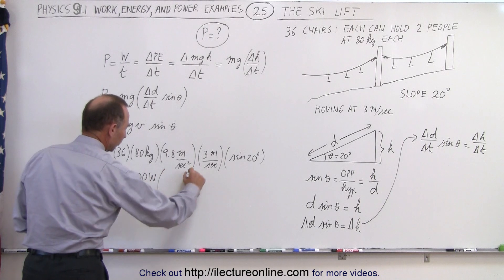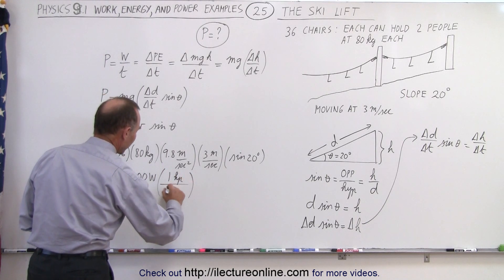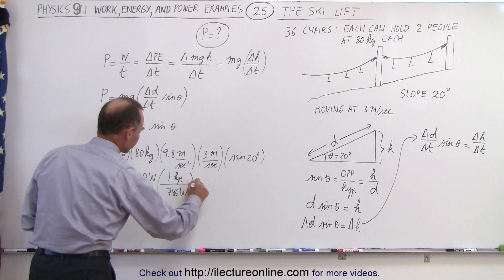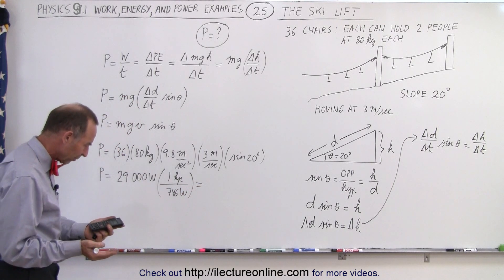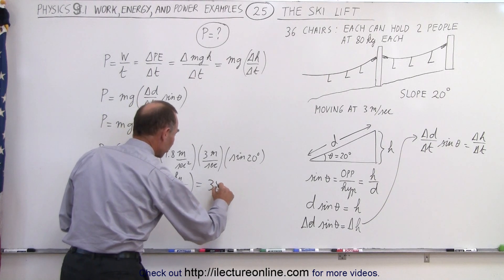And if we convert that to horsepower, we have one horsepower divided by 746 watts. So divide by 746 and that gives us about 38.8 horsepower.